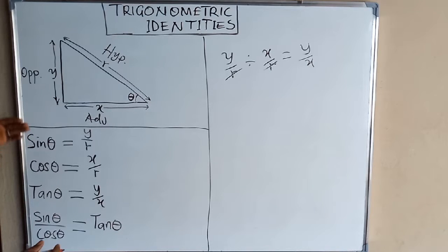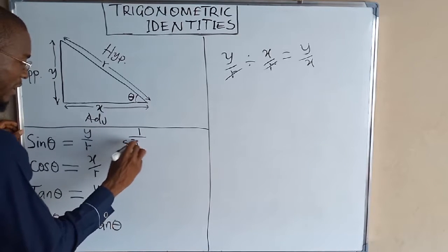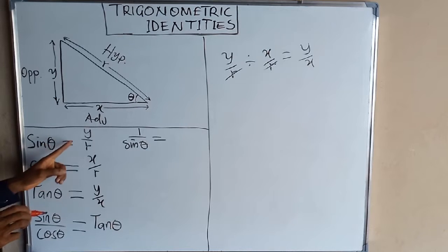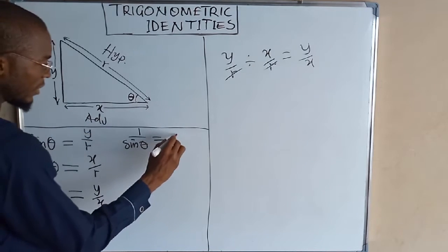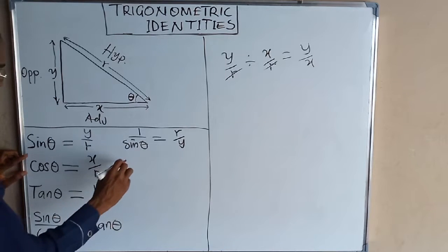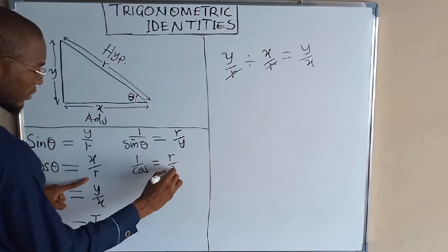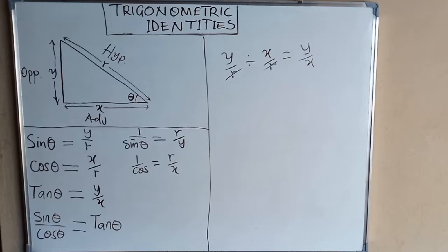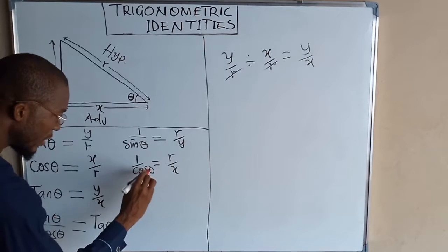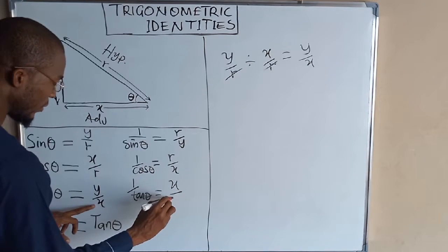Secondly, we need to obtain the reciprocal of these functions. The reciprocal of sine theta, which is one divided by sine theta, is r divided by y instead of y divided by r. The reciprocal of cosine is one divided by cos, which is r divided by x. For tangent, the reciprocal of tangent is one divided by tangent, which is x divided by y.